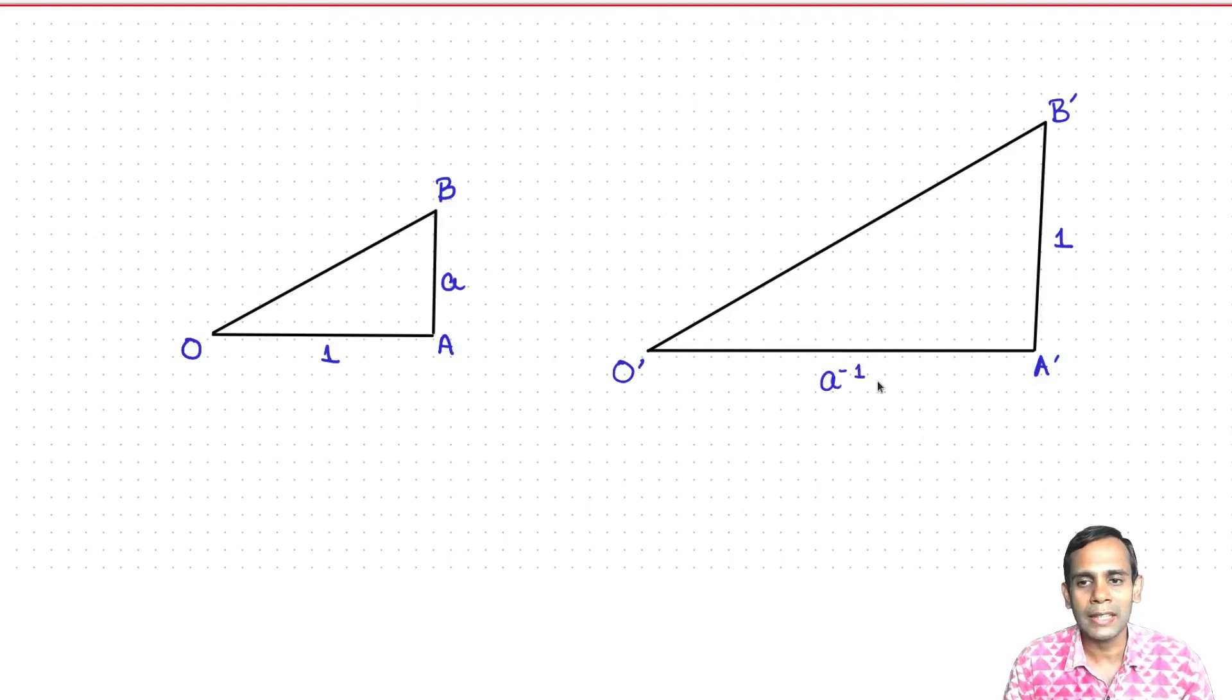And so if you can construct A, then you can also construct A inverse using straight edge and compass. And this shows that all constructible numbers indeed form a field.